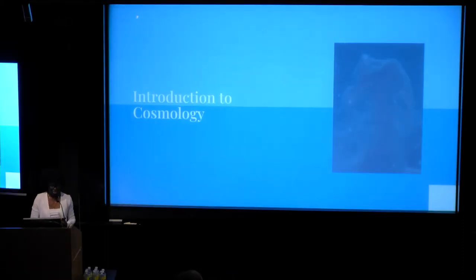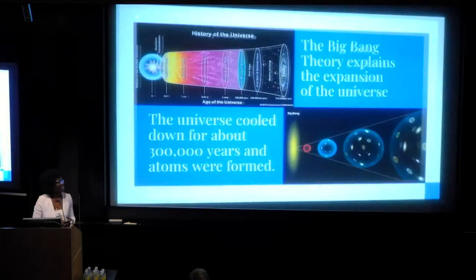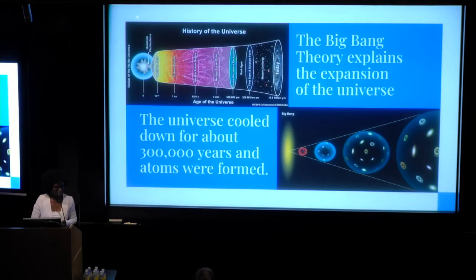So just a quick introduction to cosmology. Although the previous members have given us a quick summary, I'll do it again. You guys may have heard of the Big Bang Theory. It explains the expansion of the universe. Pretty much the universe formed out of singularity, and then atoms started forming, and then it cooled down for about 300,000 years. And after that, galaxies started forming and stars and the earth as you know today.